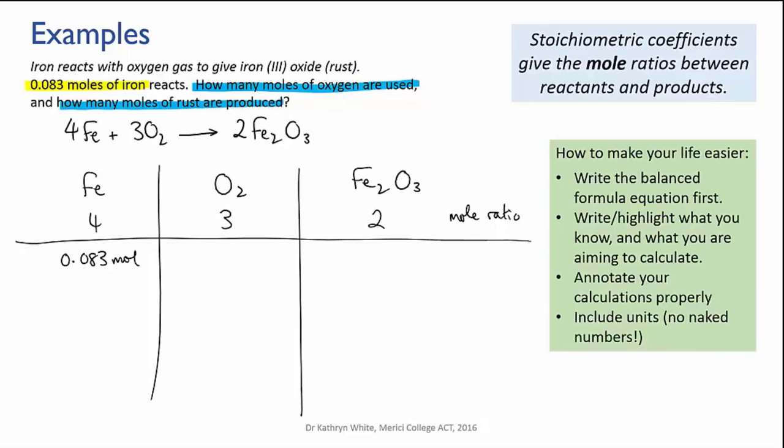So to find the amount of oxygen that's required, we're going to divide 0.083 by four. This will tell us what one part is, and then multiply by three, which gives us 0.06225 moles of oxygen.